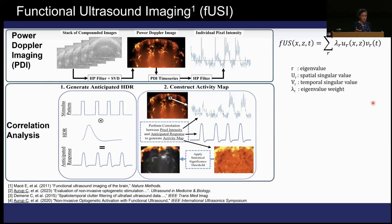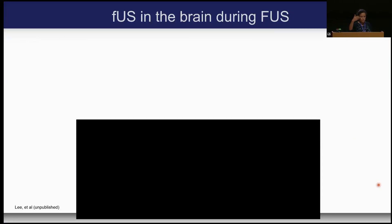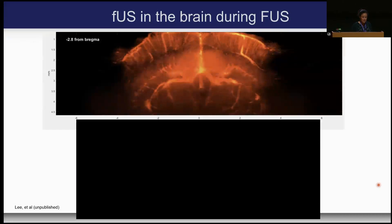With the SVD, you have eigenvalues matched to specific flow, and according to the weights you use, you can make a map. If you're doing a stimulation — such as electrical or focused ultrasound stimulation — you can convolve that with a hemodynamic response and see which parts of the brain are highly correlated with the stimulus. According to what kind of filter you use, you can look at tissue clutter, capillaries, venules, veins and arteries. Depending on eigenvalue sorting, you can go from slow or no flow to the highest flow in the arteries.